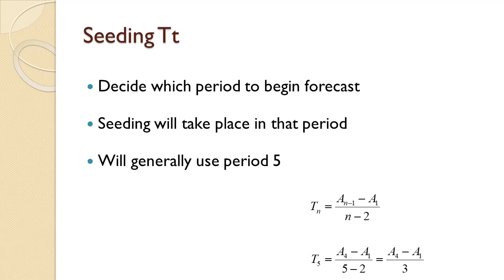The first step is to decide which period to begin the forecast in. It is that period that we will be seeding. Unless the problem states otherwise, period 5 is a good period to use. It gives a reasonable balance between estimating the trend component and not using up too many periods.